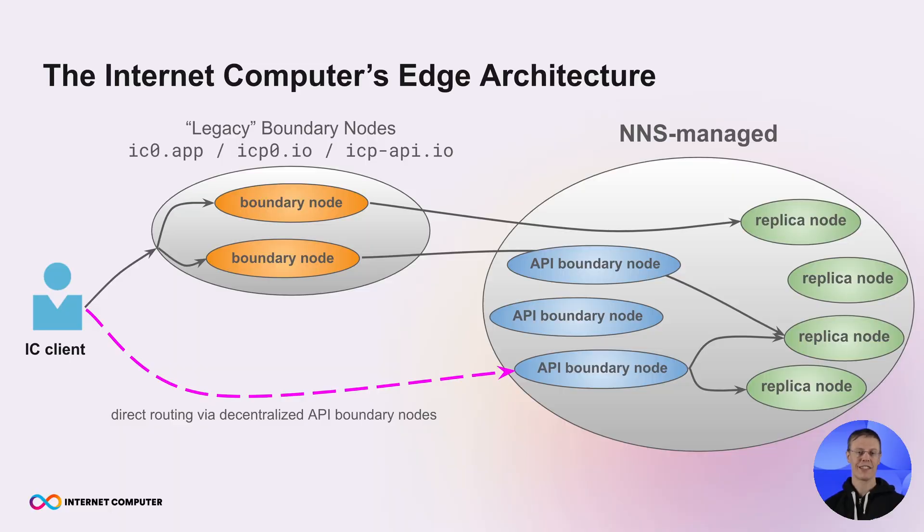Now a very nice thing of the centralized boundary nodes is that they were all behind one load balancer. So you could just send your request to ic0.app and you did not have to worry about how many boundary nodes there are, where they are located, and whether they're healthy and ready to serve your request. You just handed off your request and it would reach its destination.